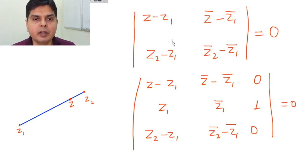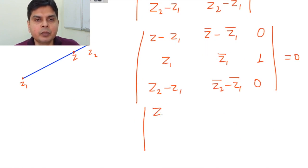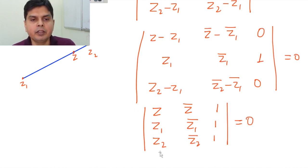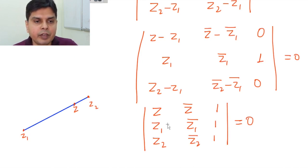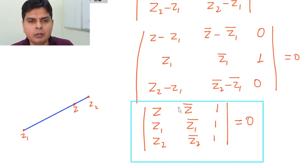The advantage of the 3×3 form is that when you add the second row to the first and third rows, z1 cancels and you get a very neat 3×3 determinant: |z, z_bar, 1; z1, z1_bar, 1; z2, z2_bar, 1| = 0. This neat 3×3 determinant is the condition for z, z1, z2 to be collinear, or equivalently, the equation of a line passing through z1 and z2.